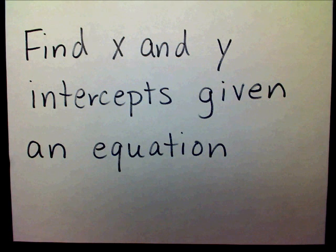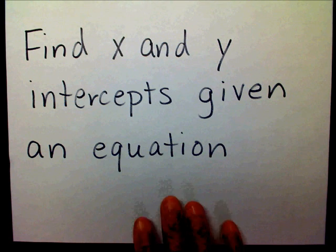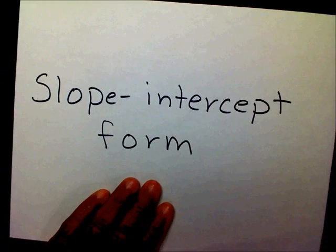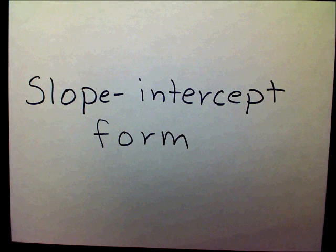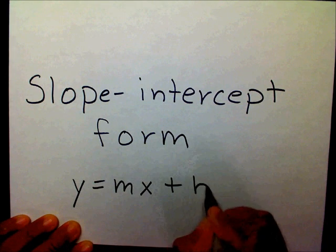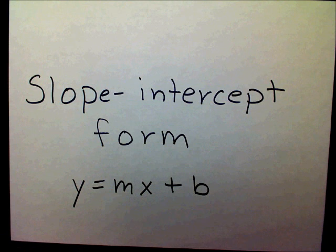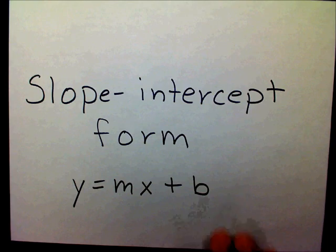Today we're going to find our x and y intercepts given an equation, and the equation we're going to use is slope intercept form. We know that slope intercept form is y equals mx plus b. If you have not watched the video on slope intercept form, please watch that video and I'll explain what each piece of this equation means. Let's get started.